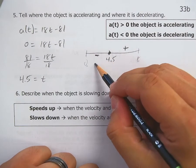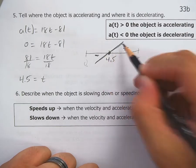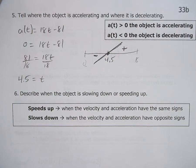So what you've got is an acceleration that is negative to the left of 4.5 seconds, and it's positive to the right of 4.5 seconds.